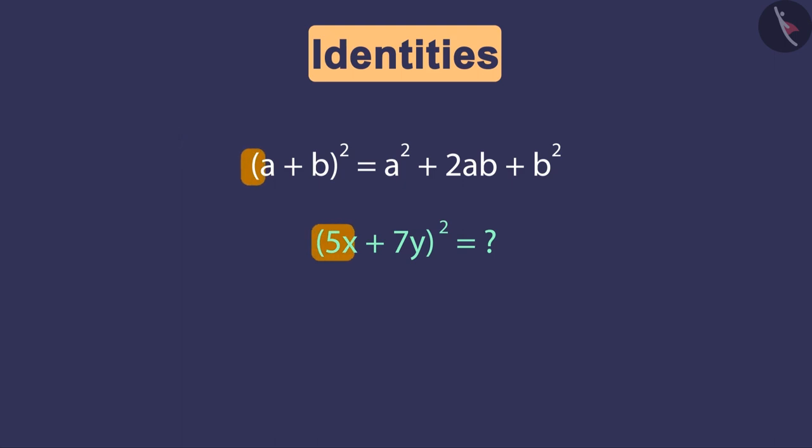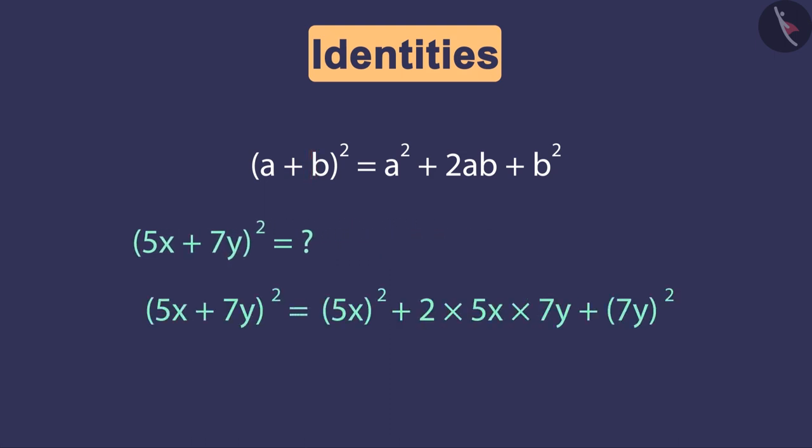Here we will consider a as 5x and b as 7y. Therefore the value of (5x + 7y)² will be equal to this. After simplification we will get this as our final answer.